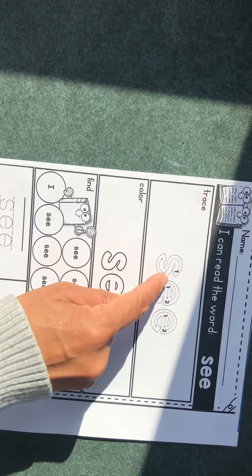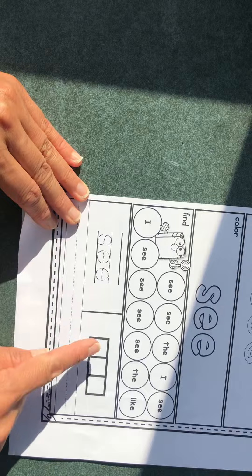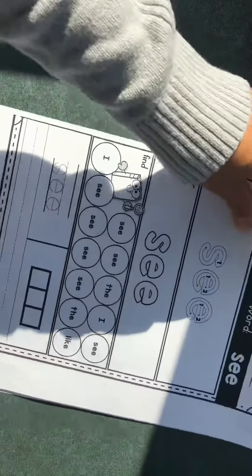Then they have to trace it, trazarla, color it, find it, trace it, and write it. This is what it's going to look like.